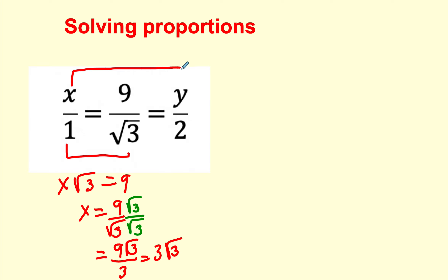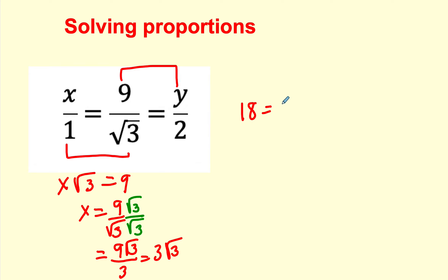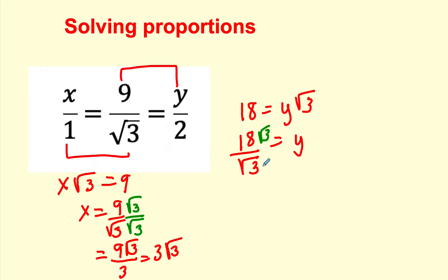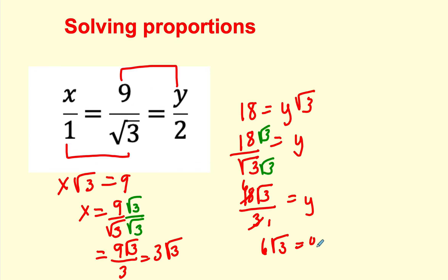I'm going to use these two to multiply. I'm going to cross multiply, so that'll be 18 is equal to y times √3. I'm going to divide, so I'm going to have 18 divided by √3. Multiply the top and bottom by √3, and then this will be y equals 18√3 over 3. √9 is 3. I'm going to reduce, and the answer will be 6√3. So 6√3 will be equal to y.